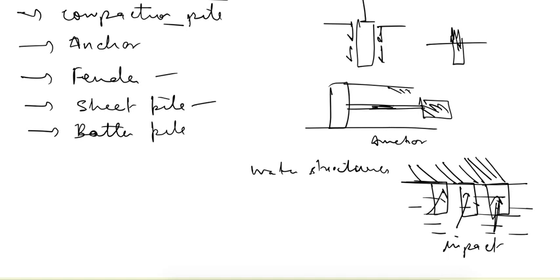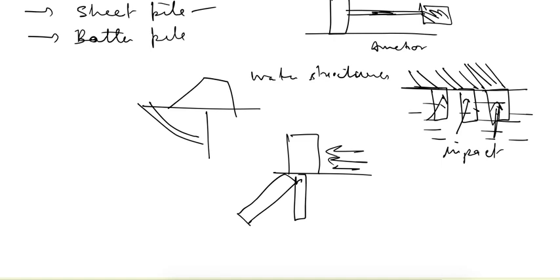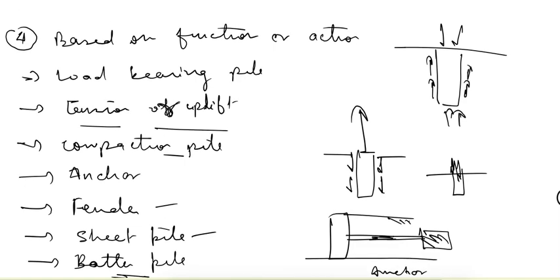Sheet pile is used to cut off seepage. It is provided to prevent or reduce seepage. Batter pile is a pile which is inserted at an inclined angle. For example, if there is a wall and we are applying some load from the side, rather than keeping the pile vertical, we keep it in an inclined direction. That is called a batter pile. This was the criteria based on function or action.